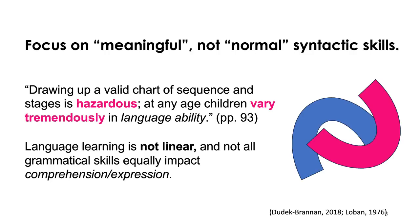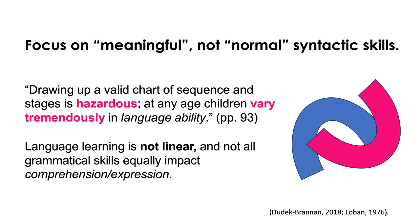As Dr. Lobin said in this article, 'Drawing up a valid chart of sequence and stages is hazardous. At any age, children vary tremendously in language ability.' Language learning is not linear, and not all grammatical skills equally impact comprehension and expression. So not only is it really hard to do, it's not always necessary in order to help kids. We want to think about what's meaningful and what's going to make the biggest impact on their ability to develop higher-level cognitive processes.